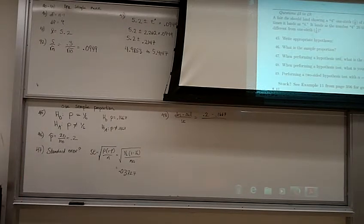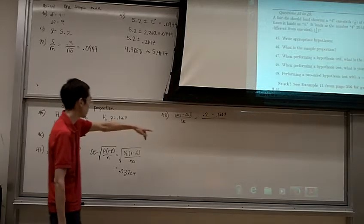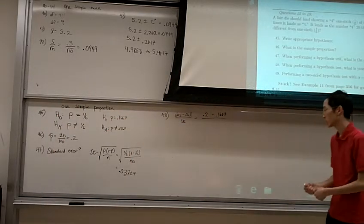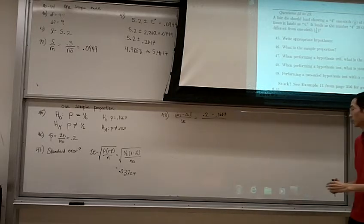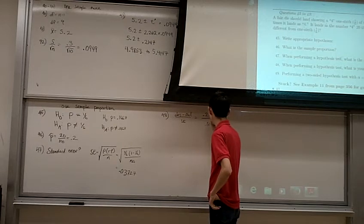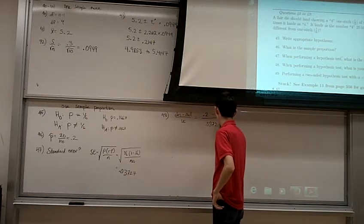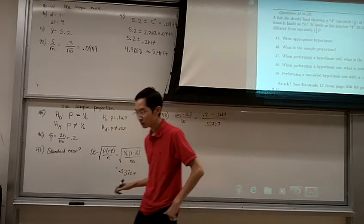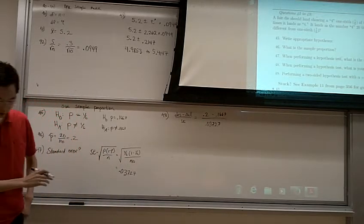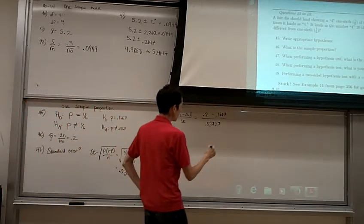Alright, so it says the observed value is 0.2, our null hypothesis has 0.1667, and our standard error is 0.03727, or if you rounded it up, something a little bit different, probably doesn't make a huge difference. Our z-score that we get is 0.89.